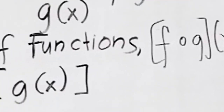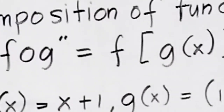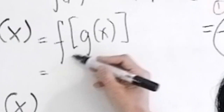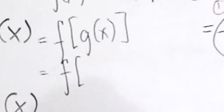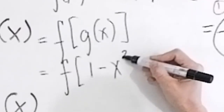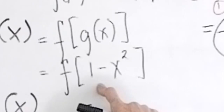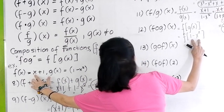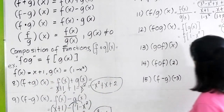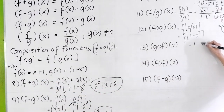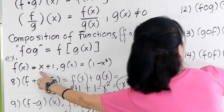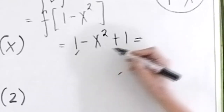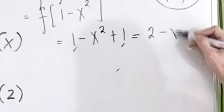For composition f(g(x)), by definition substitute g(x) into f. Since g(x) = 1 - x², replace x in f(x) = x + 1 with (1 - x²). This gives (1 - x²) + 1. Simplifying: 1 plus 1 is 2, so the answer is 2 - x².